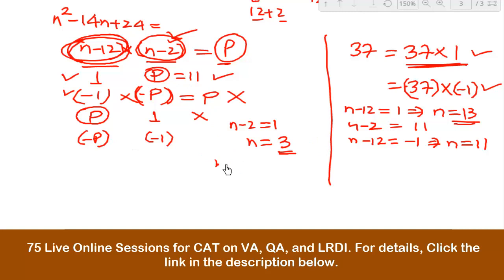Last case: n - 2, I have to equate with -1. So the value of n will be 1. Now the moment I put the value of n is equal to 1 here, then this will be -11 and this portion will be -1. Clearly, you can see that this equals 11, which is a prime number. That means the last case is a valid case for us.